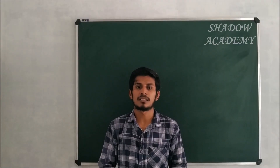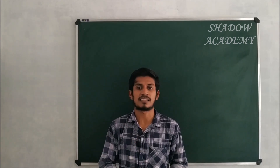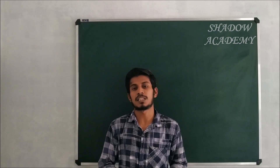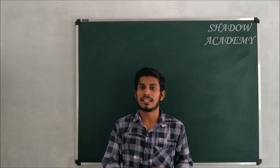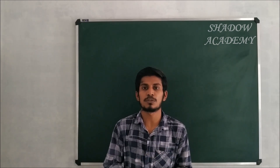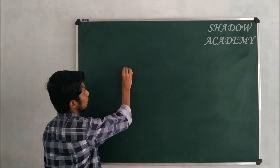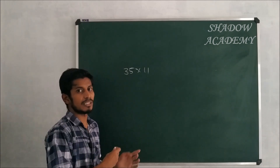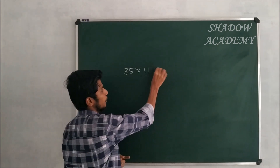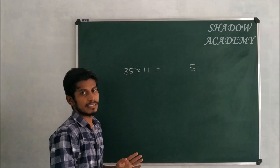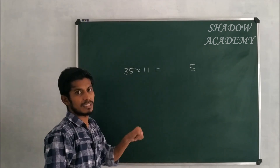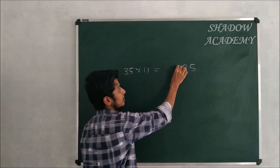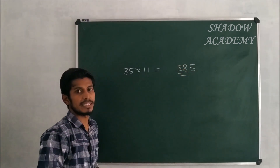The first tip takes 5 seconds, the second tip takes 2 seconds. Now for the multiply-by-11 trick: take a number, write the right digit, then add adjacent digits, and write the left digit. The answer comes out in seconds.